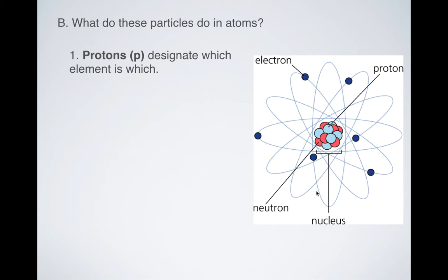They change things from one element to another element. So if you were to all of a sudden have a helium atom with two protons, and for some reason you lost a proton, that means that would turn from helium into hydrogen immediately.